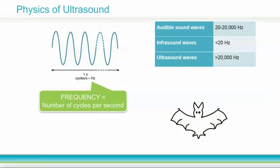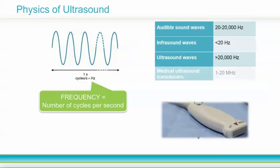Waves with a frequency greater than 20,000 hertz are called ultrasound. Bats use ultrasound both for communication and echolocation. Medical ultrasound uses waves with frequencies between 1 and 20 megahertz, orders of magnitude higher frequency than audible sound waves.